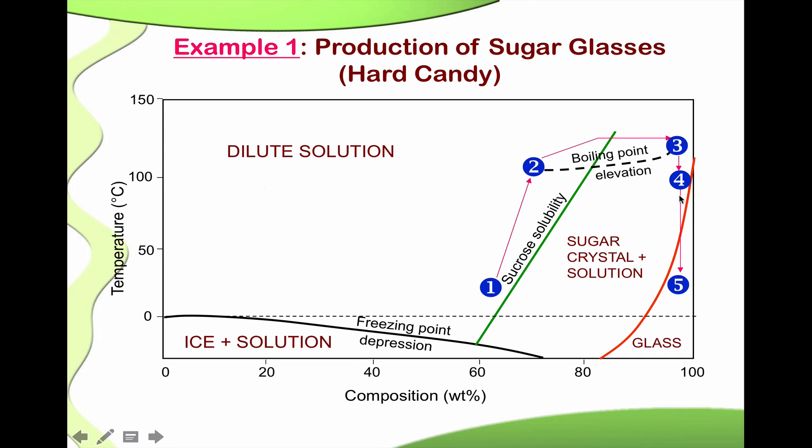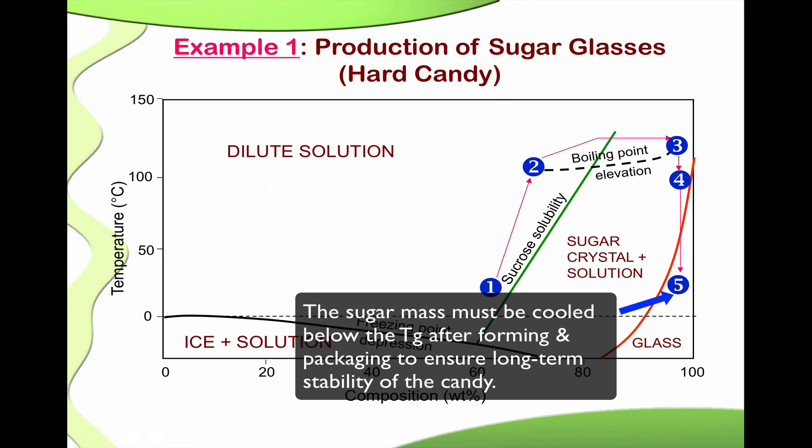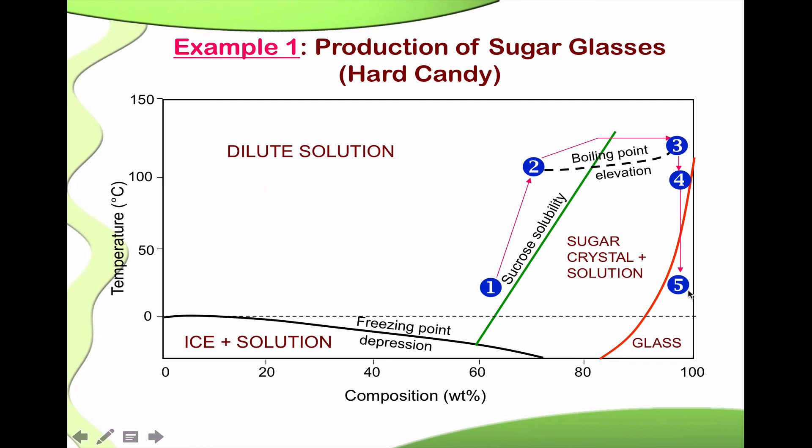So, it is very important actually to bring down the temperature cool enough and bring it down to below the glass transition curve here. So, that now, we get the sugar mass to form a glass amorphous state. And this is the end point or the desired form of product that we want in the production of sugar candy.